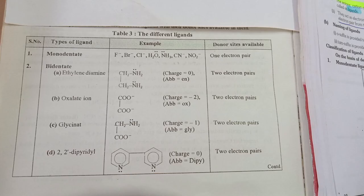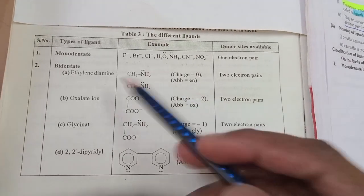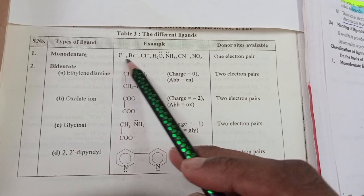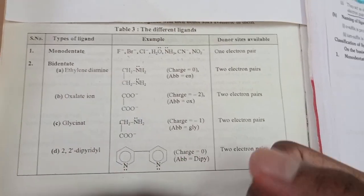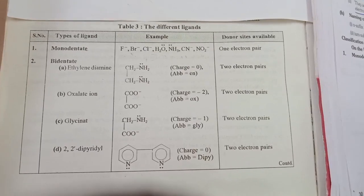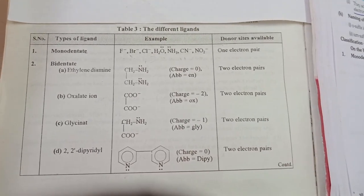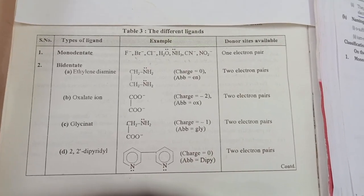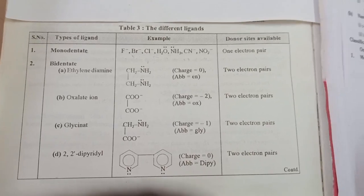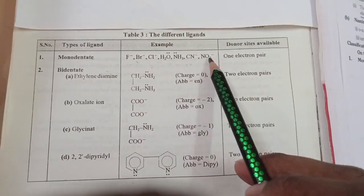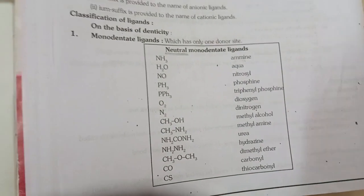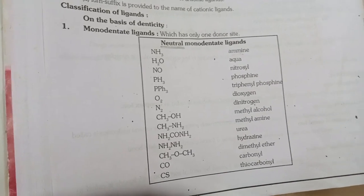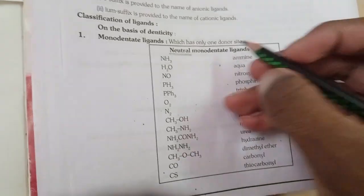Welcome to NEET Preparation Tamil. Let's continue. These are monodentate ligands — this is the theme, but you can see how they are named. Monodentate ligands are neutral, anionic, and cationic. You can see how each type is named.